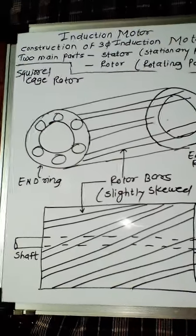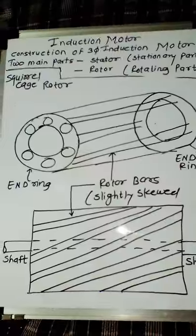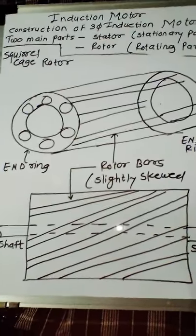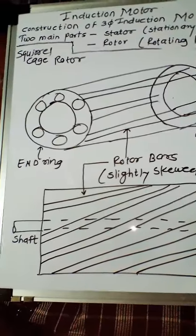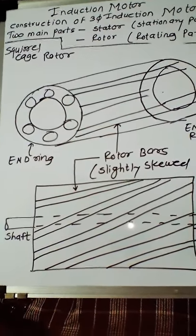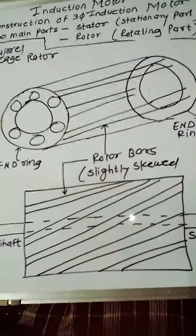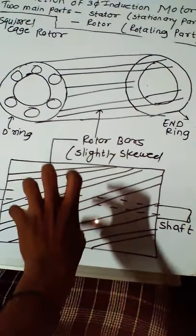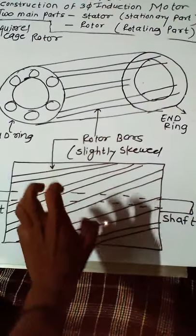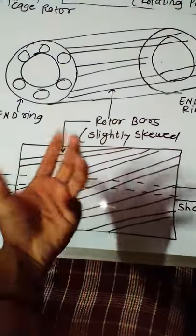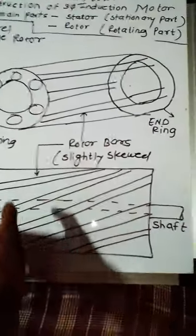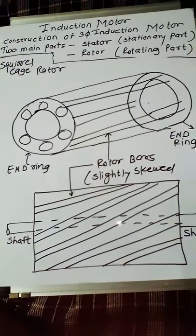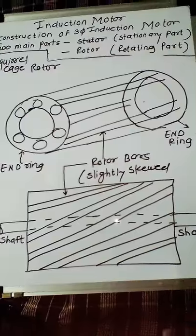This type of rotor is widely used in induction motors. The slight skew of the rotor bars also helps the three-phase induction motor run quietly without producing any magnetic hum — this is another advantage of the squirrel cage rotor. The motor starts without producing any noise, and the magnetic interlocking tendency of rotor bars with respect to the stator bars is reduced because of the slightly skewed bars placed in the rotor slots.